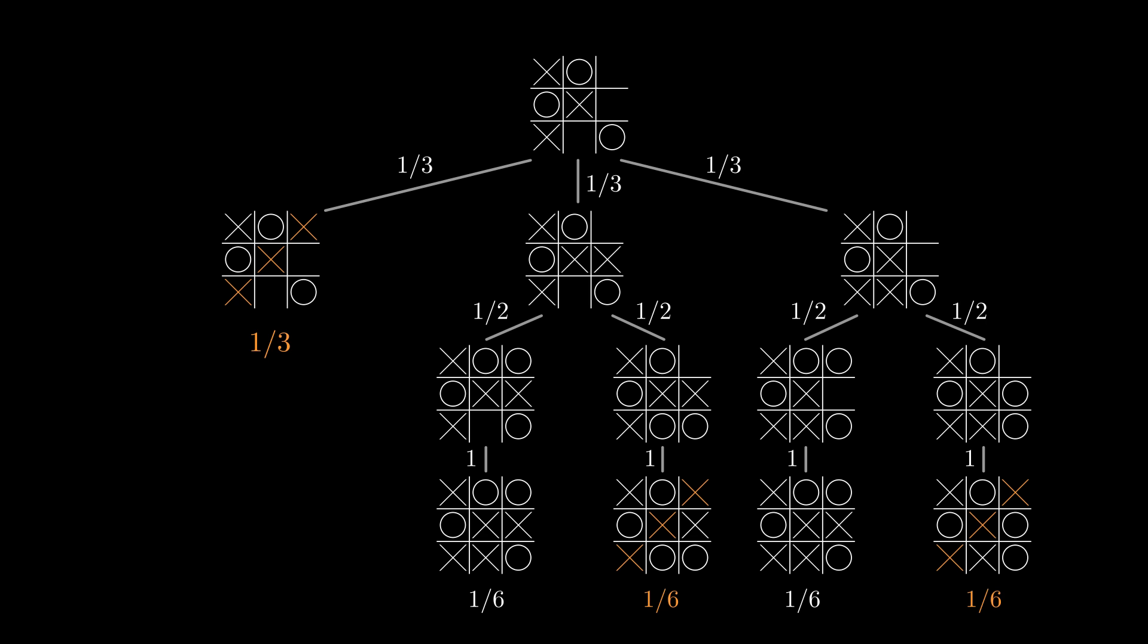Multiplying these probabilities out, we get a probability of 1/6 for each of the outcomes at the bottom, but 1/3 for the outcome in which X plays the winning move right away. Adding together the branches in which X wins, we get a probability of 2/3, or 0.666 repeating, slightly higher than the 0.6 we got earlier.